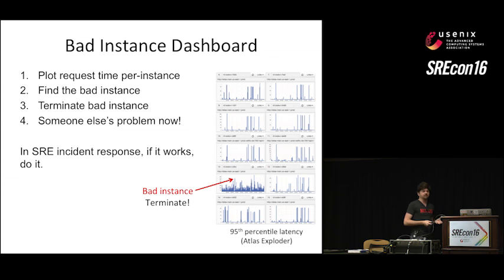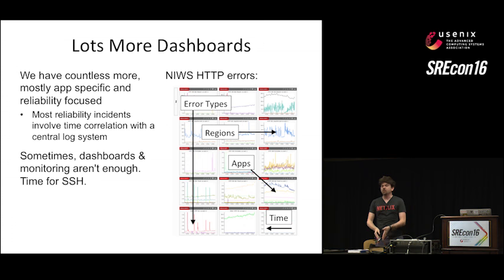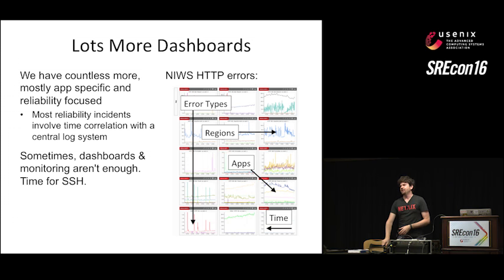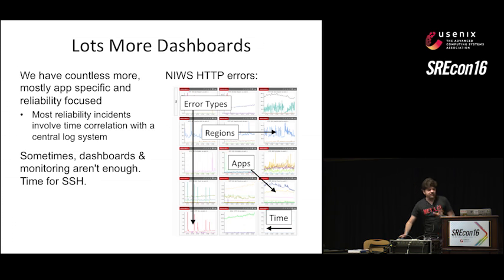We have lots and lots of metrics in Atlas for post-termination debugging. We have countless more dashboards, mostly app-specific and reliability-focused. For reliability it's critical to use Kronos, our event logging system — because basically Kronos answers 'who should I blame?' Like, Netflix is down, who just did a push of an application? That solves a lot of the issues. However, sometimes dashboards and monitoring aren't enough, and sometimes we do have to go to SSH.